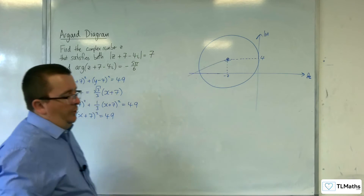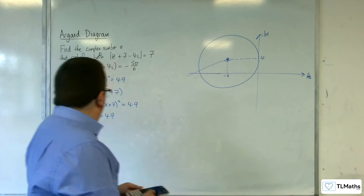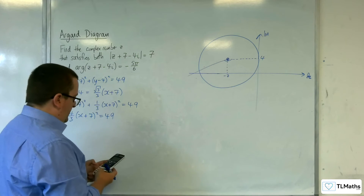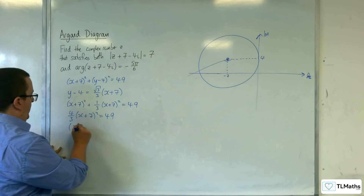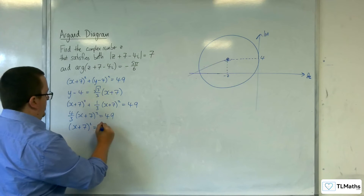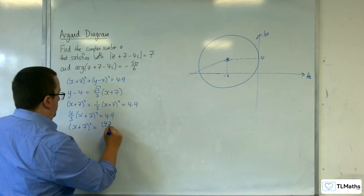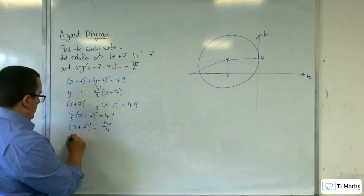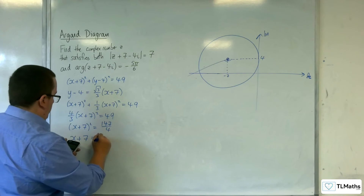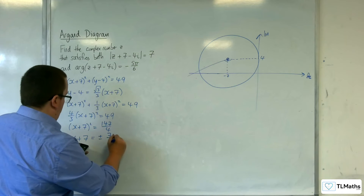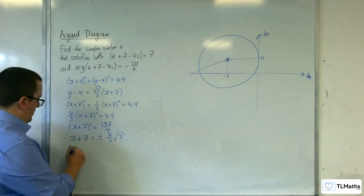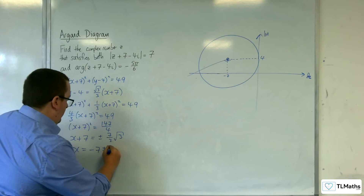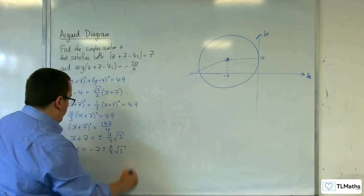Rather than expanding everything out: divide both sides by four thirds, so 49 divided by four thirds is 147 over 4. So (x + 7)² = 147 over 4. Square rooting gives x + 7 equals plus or minus (7/2)√3, so x equals minus 7 plus or minus (7/2)√3.